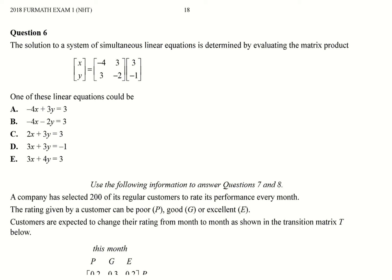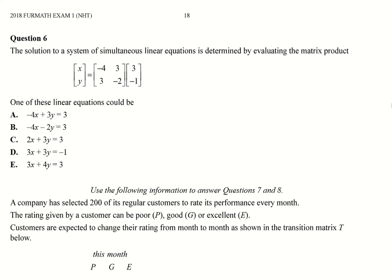All right. Solution to the simultaneous linear equation is determined by evaluating the matrix product. One of these linear equations could be, and let's work that out. So in this one, what you've got to remember is this is a simultaneous equation. So you've got your x, y. We'll call that matrix X for the moment. It's probably not the best way to do it, but this would be like our A to the negative 1, and we'll call that B. So how you would have written that before, basically, it would have been A x equals B. So basically all you need to do is, because you're going from this back to from that to there, you're getting the inverse of that matrix.